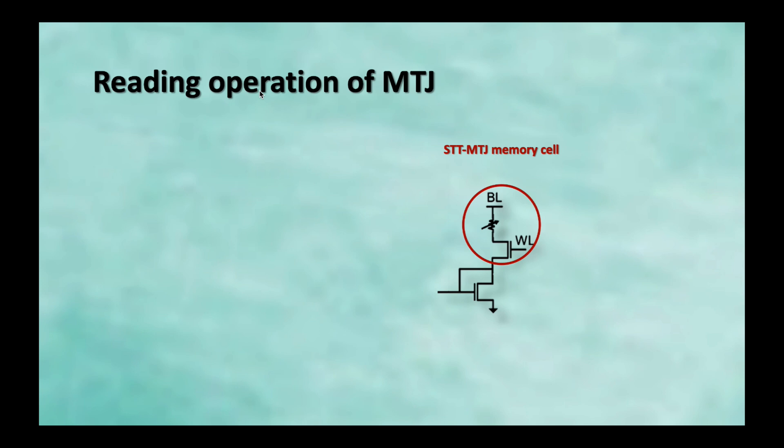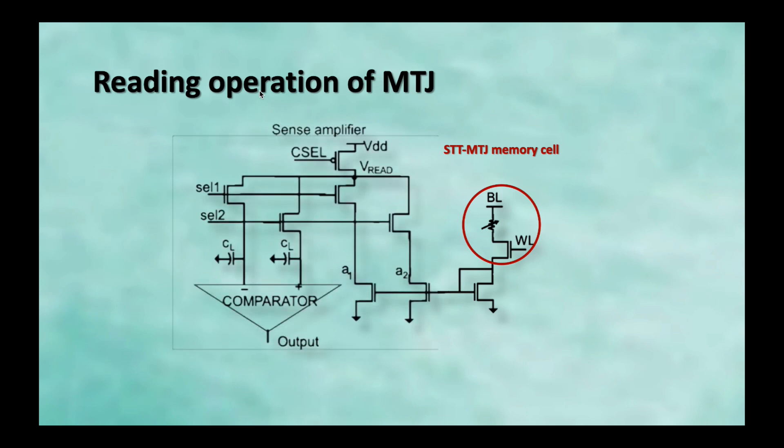By measuring the resistance of the junction, we can determine the state of MTJ. If the resistance is low, we define it as state 0. After STT switching, the resistance is high, we define it as state 1. Finally, we use the sense amplifier to convert the signal which we got from MTJ and provide the voltage high and voltage low output signal.